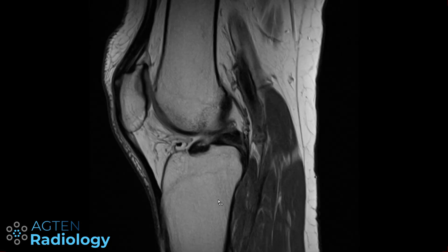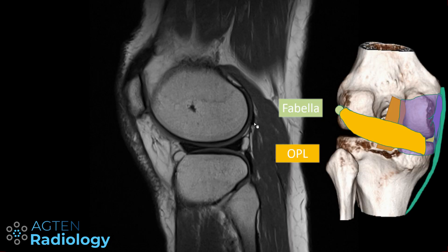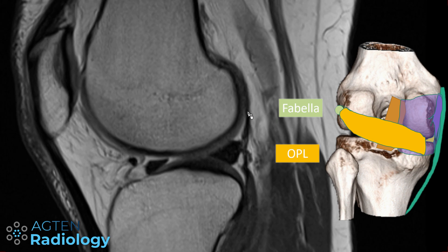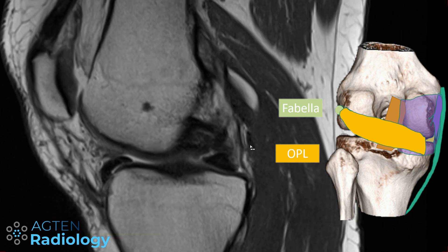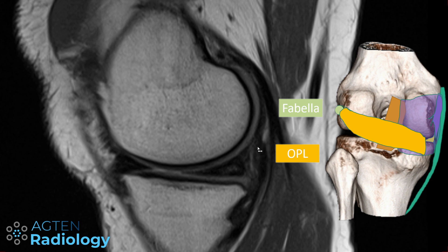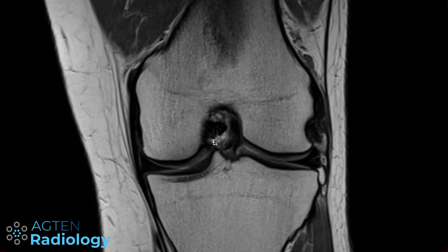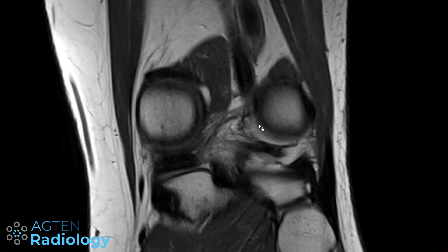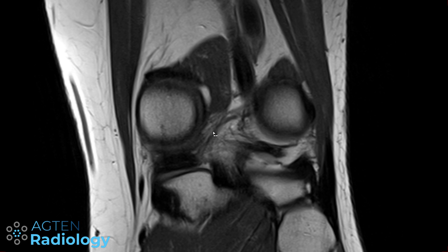The best way to identify the oblique popliteal ligament is to go to the lateral side of the knee. Here's the fibular head, then go to the region of the fabella, and if you scroll medially from there you will see the posterior joint capsule, which is a little bit thickened at times. You can see band-like structures running obliquely a little bit downward, blending in with the joint capsule on the posteromedial side of the knee. This is basically your oblique popliteal ligament. Sometimes it's also shown on coronal views, but it's really hard to see, and sometimes you don't see it at all — I wouldn't bother too much with describing isolated injuries here.